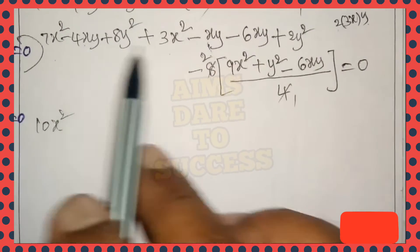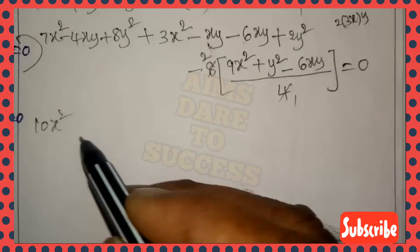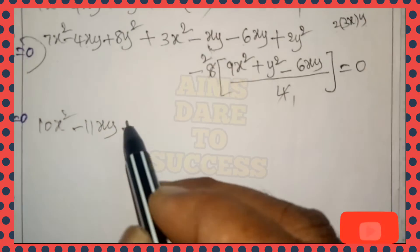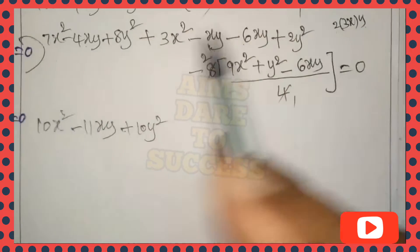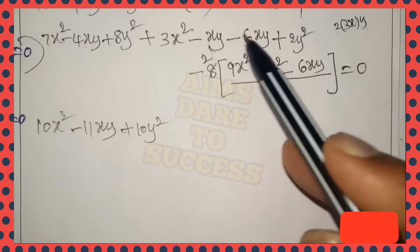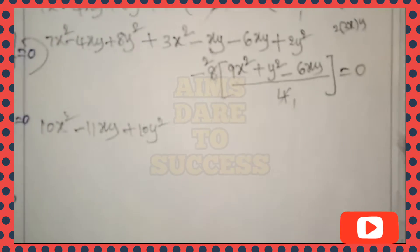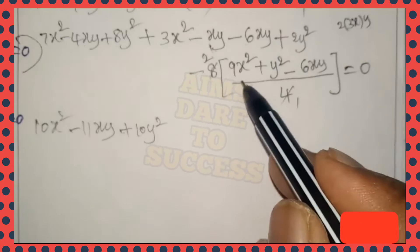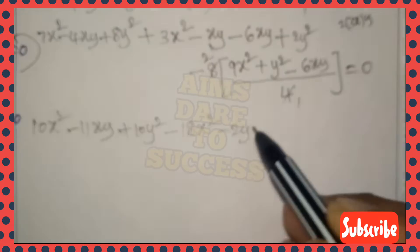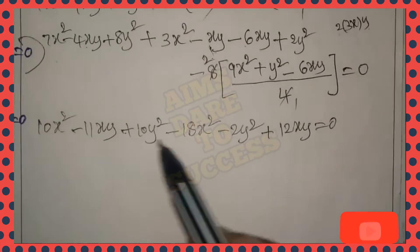Collecting all x², xy, and y² terms: x²: 7+3-18 = -8x²; xy: -4-1-6+12 = -11xy+12xy... simplifying to +1xy; and y²: 8+2-2 = 8y².